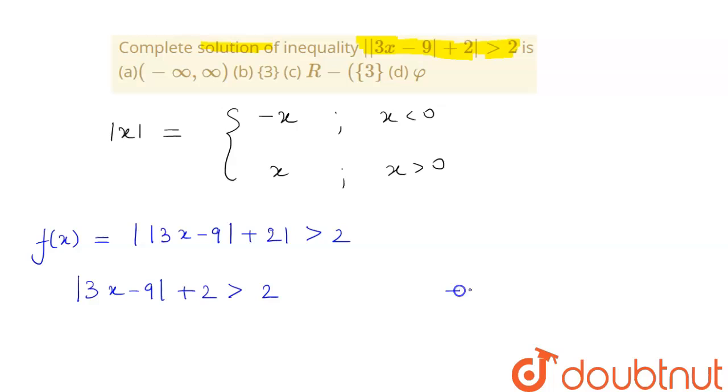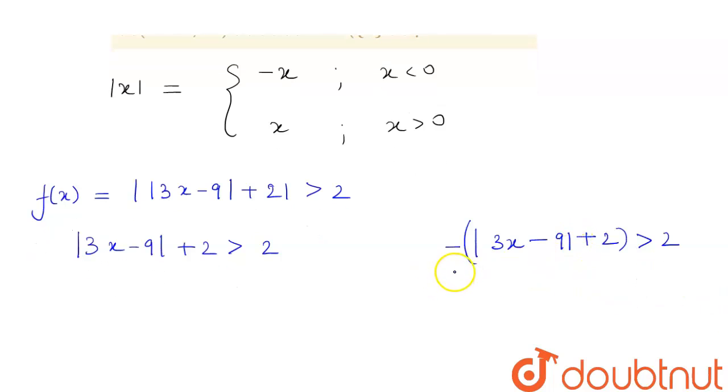Or it will open up as -(|3x - 9|) + 2 > 2. So if we see firstly this condition, if we multiply both sides by -1, we see that we will get |3x - 9| + 2 < -2.